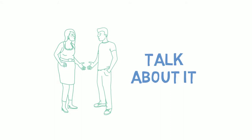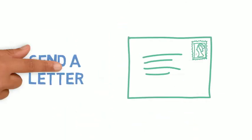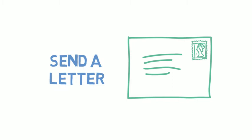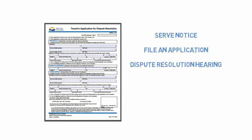Sometimes the other person just doesn't realize what is going on or doesn't understand it from your perspective. If this doesn't work, the second step is to send them a letter asking them to address whatever issue is causing the dispute. You can do this step on your own or with the help of a friend or a relative. The third step is to file an application for dispute resolution and or serve a notice to end tenancy with the Residential Tenancy Branch.